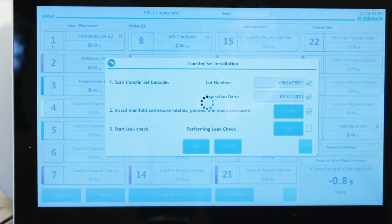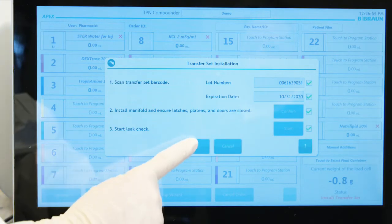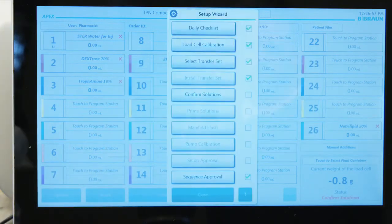APEX will then perform the second part of the leak check to ensure the integrity of the transfer set. When APEX has successfully completed its leak check, the OK button activates. Tap OK to exit from the transfer set installation screen and return to the setup wizard.